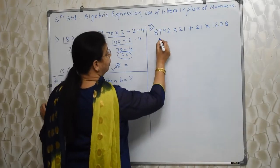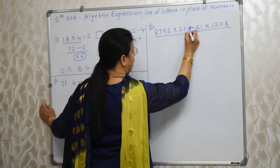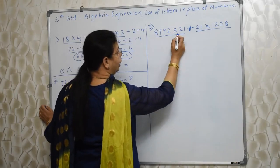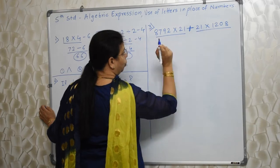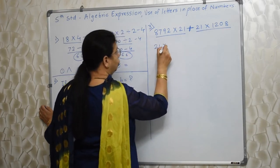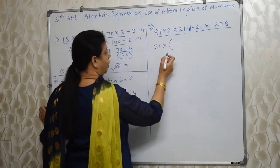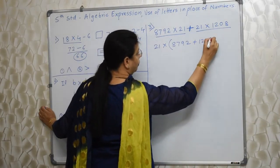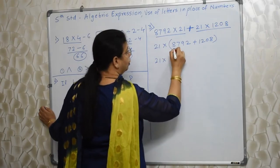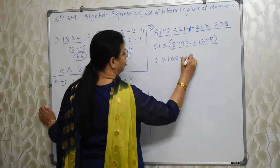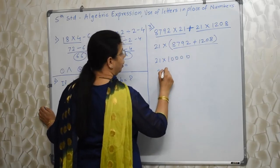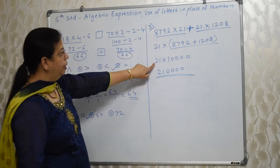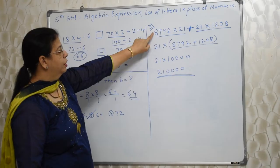So what can be done? Observe — this is 1 and this is another 1, and in between there is plus. As per BODMAS, we will perform this and then this. Here 21 is there — multiplication by 21. Here also 21. So this 21 we can take out as common. Inside what remains: 8, 7, 9, 2 plus 1, 2, 0, 8. Then 21 into that bracket — solve this. This is 10,000. 21 into 10,000 — so easy, 21 and 4 zeros. Answer is ready without doing the full multiplication, because this multiplication with only zeros is very easy.